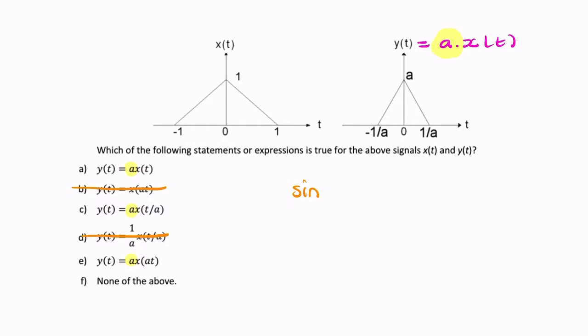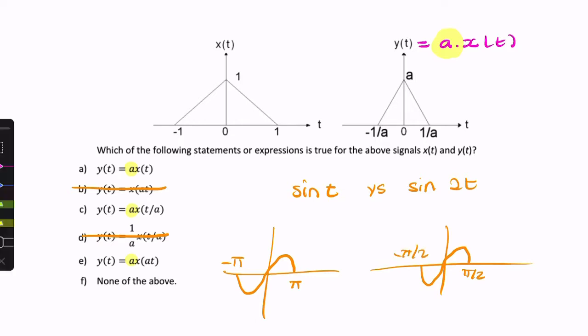You can think of this if you look at the example of sine t compared with sine 2t. So, sine t would look something like this from minus pi to pi. But sine 2t would be compressed. So, it would be from minus pi over 2 to pi over 2. So, this compression, this period here is 2 pi, whereas this here is pi. So, by multiplying by 2, this actually results in that being divided by 2.